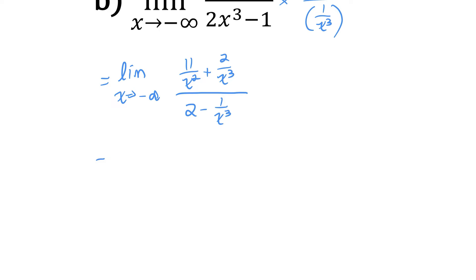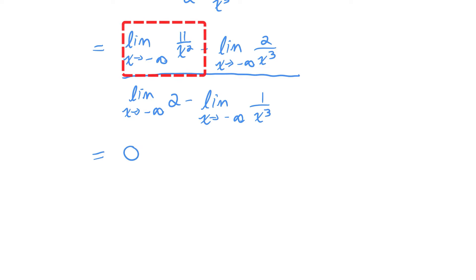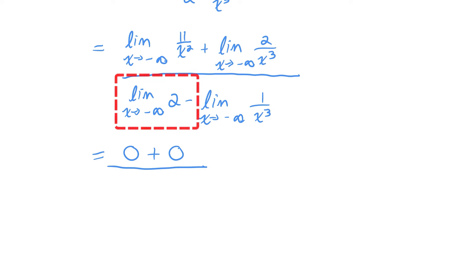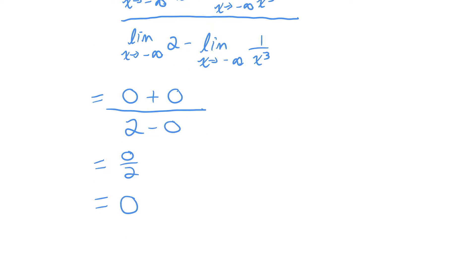Based on the limit rules, I can find the limit of each of those terms individually. As x approaches negative infinity, 11 over x squared goes to 0, and 2 over x cubed goes to 0. In the denominator, 2 is still 2 as a constant, and 1 over x cubed goes to 0. So I have 0 over 2, which is 0. Zero is a perfectly fine limit to find.